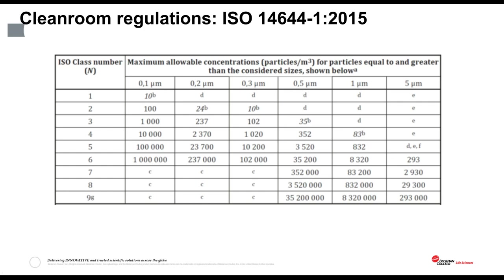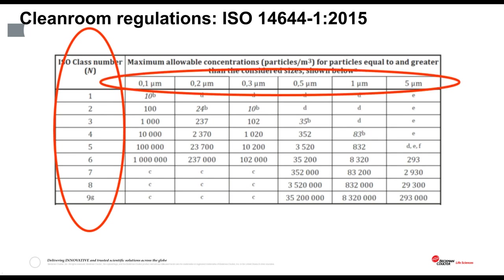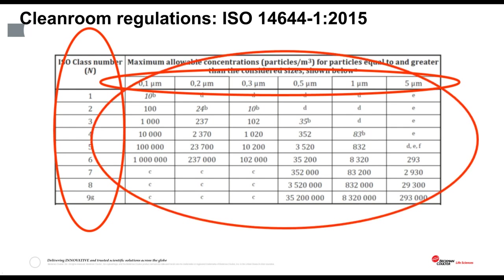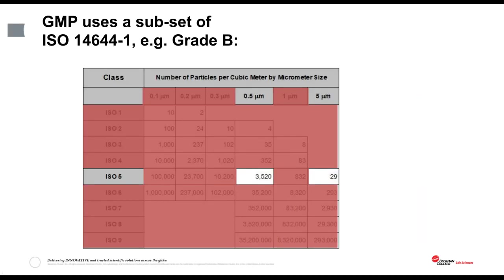Both the European GMP and the North American CGMP documents tell the reader to refer to the classification procedures laid down in ISO standard 14644-1. The ISO standard is not a GMP document and is designed to give guidance rather than a mandate, but the fact that it is referenced by the GMP effectively gives it the same status as a GMP document for those manufacturers regulated by GMP. The ISO has a wide range of clean room classes from 1 to 9, covering particle sizes from 0.1 microns up to 5 microns. The user must decide what particle sizes they are interested in and how clean the room must be to carry out their process.